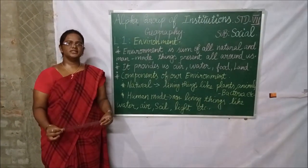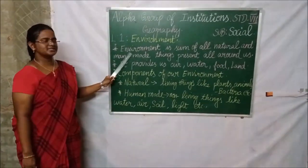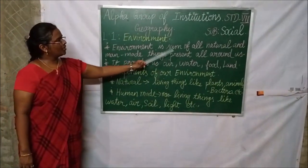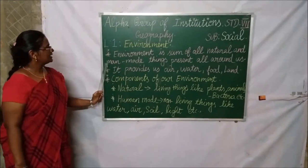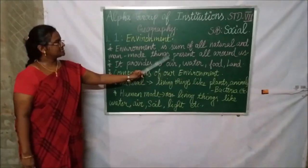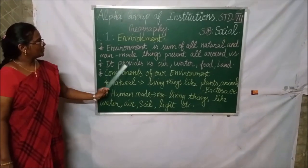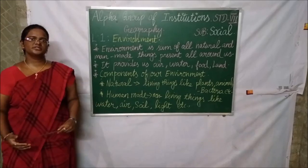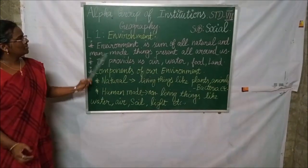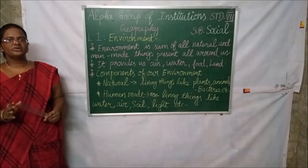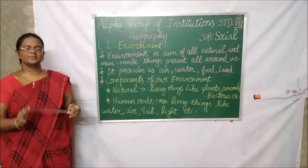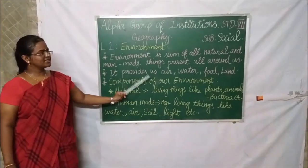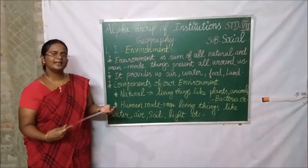We have already seen about environment. So what does environment mean? Environment is the sum of all natural and man-made things present all around us. It provides us air, water, food, and land.